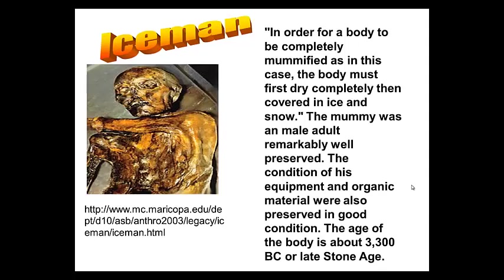Here's Iceman. What you're looking at is a fossilized person. In order for a body to be completely mummified, as in this case, the body must first dry completely, then be covered in ice and snow. The mummy was a male adult, remarkably well preserved. The condition of his equipment and organic material was also preserved in good condition. This body is about 3300 BC, or the late stone age — one of the oldest fossils that we have.